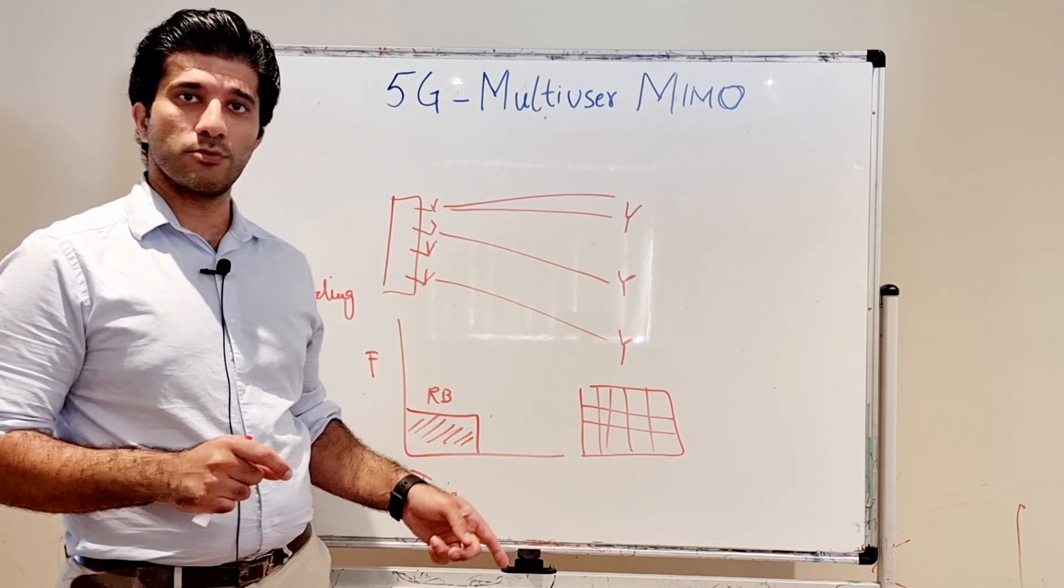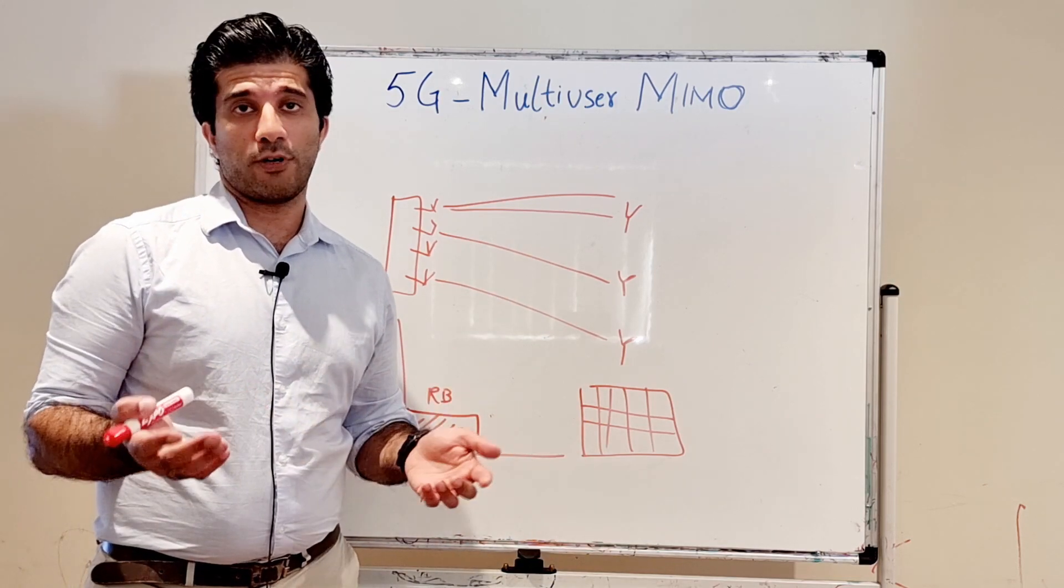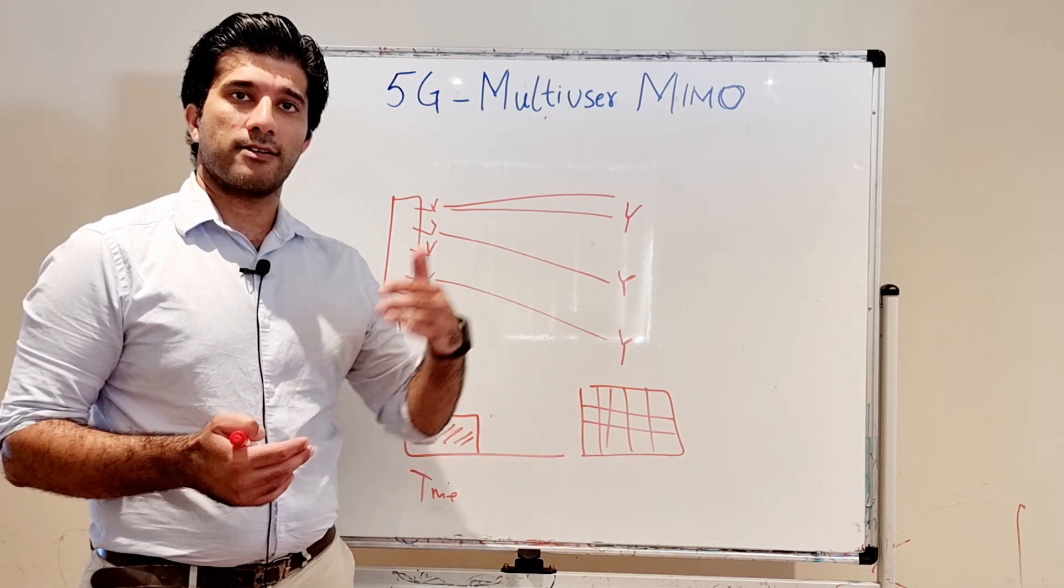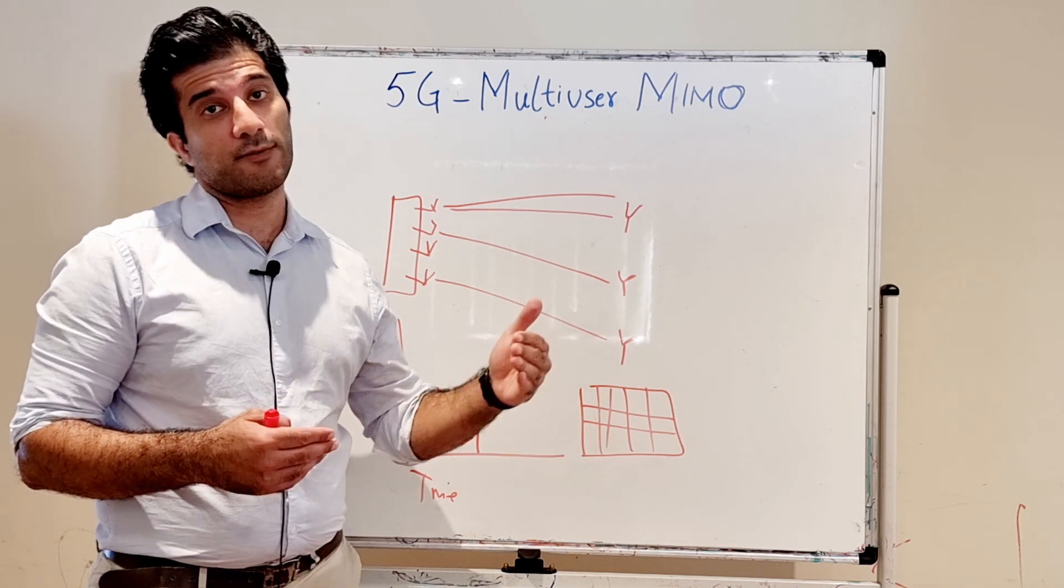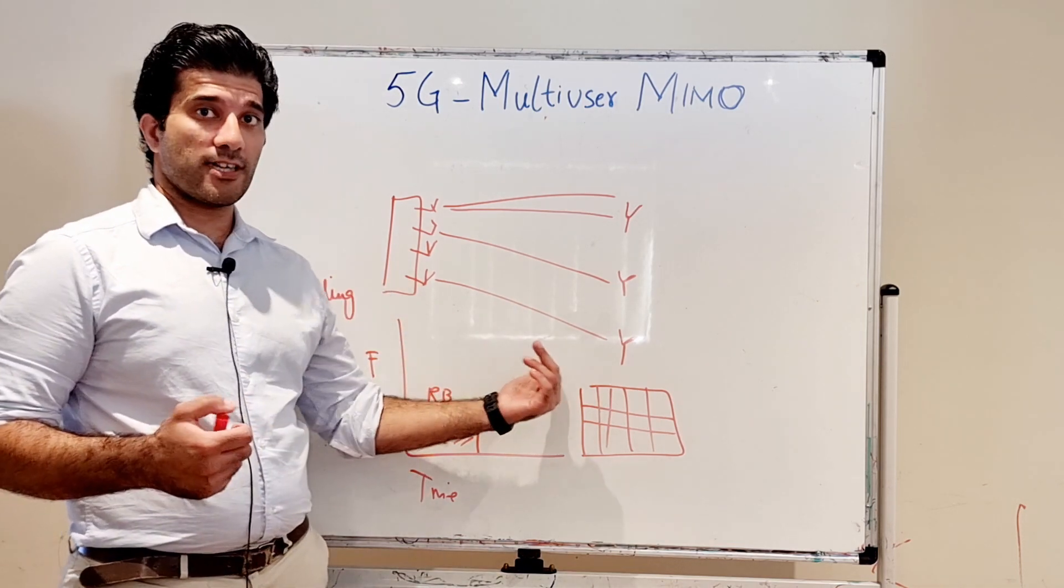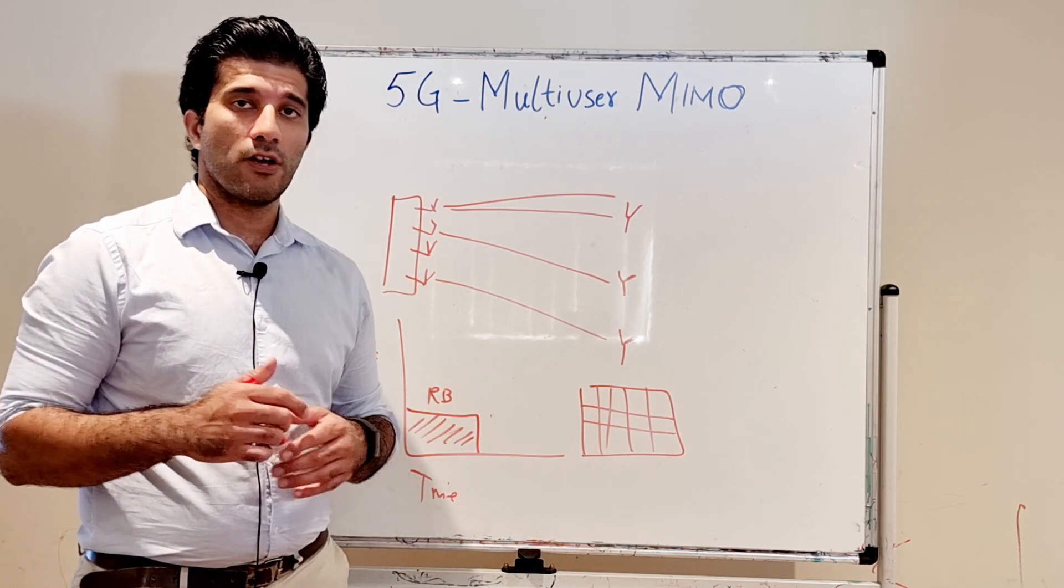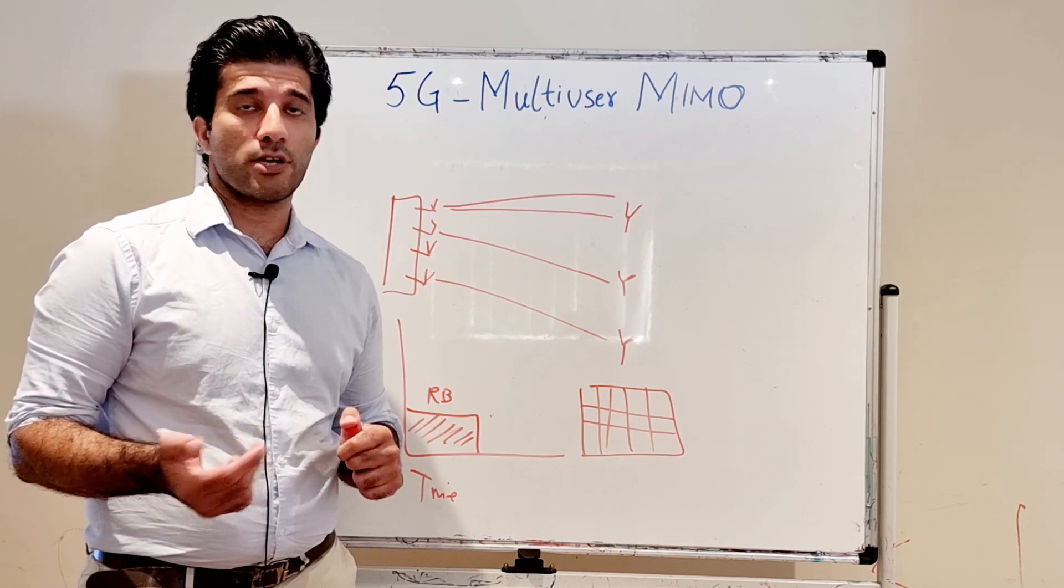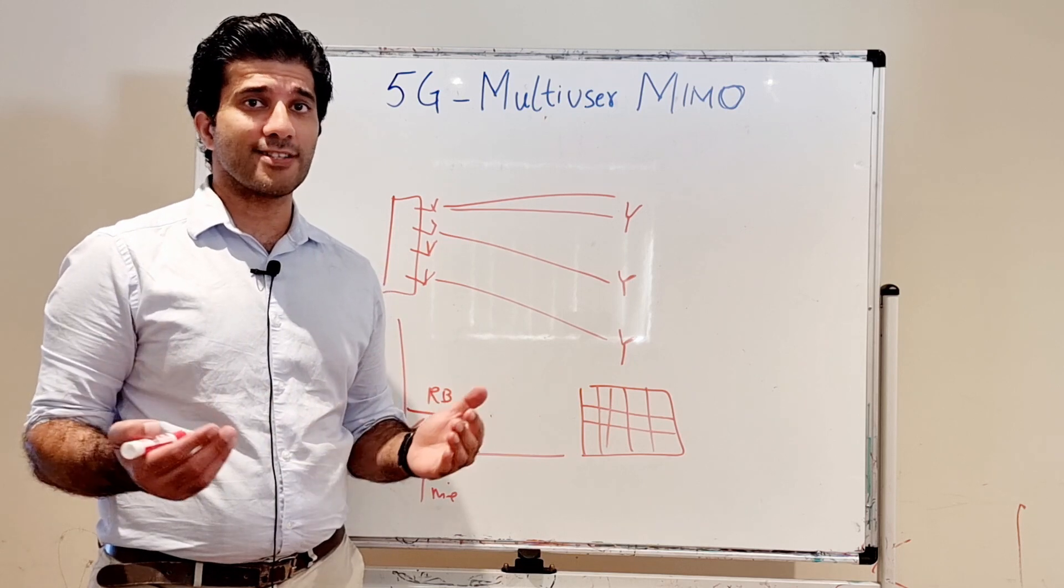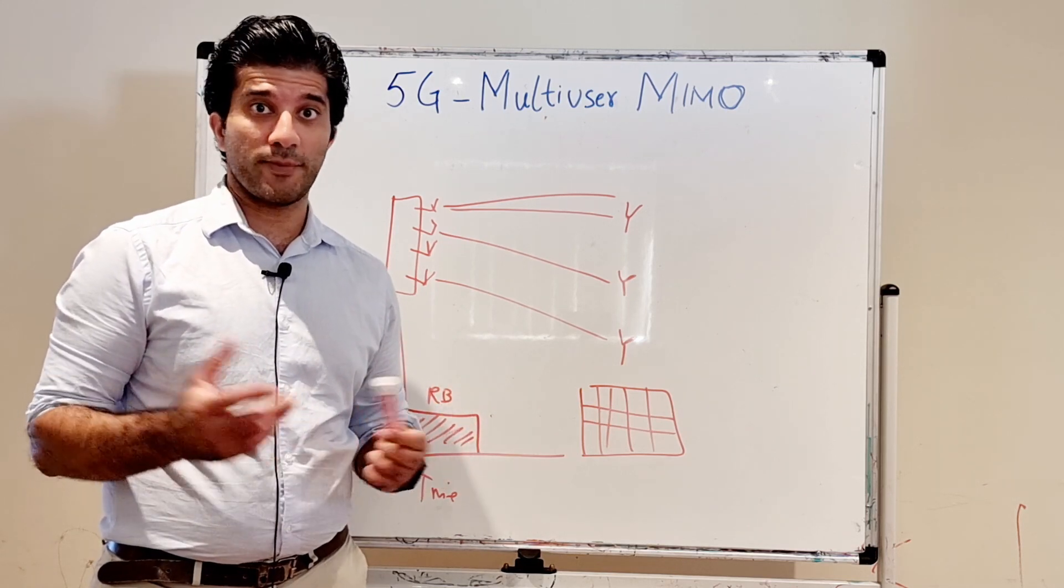In the end, your spectral efficiency improves a lot because you are using the same time and frequency resource and serving multiple users or giving it to the same user who increases throughput. Of course, these things are very sensitive to your signal-to-noise ratio, so any change in that or in the channel conditions will affect this and eventually affect the performance of the UE. But as a concept, it's very interesting and promising.